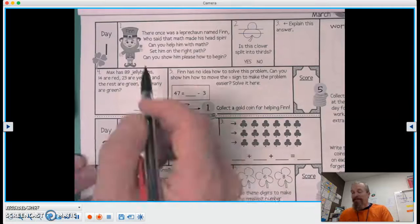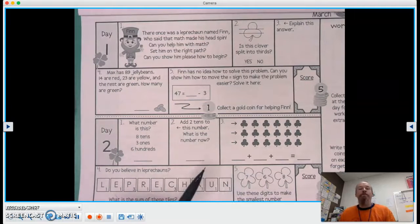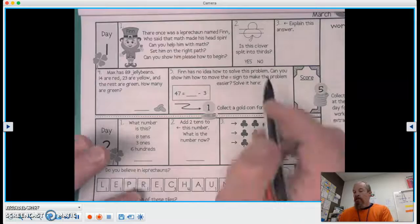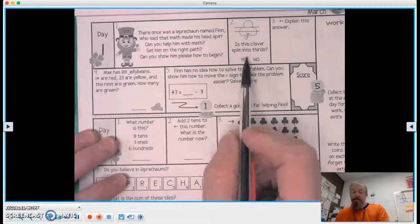So number two, here we go. That's like a freebie point right there, right? All right, number two. Is this clover split into thirds? Well, I see one, two, three. So there's three parts. It must be yes, correct?